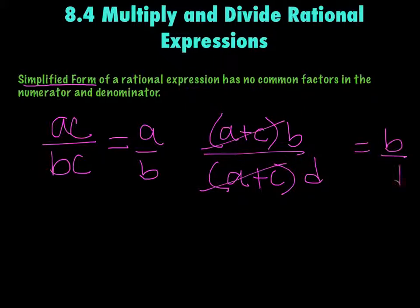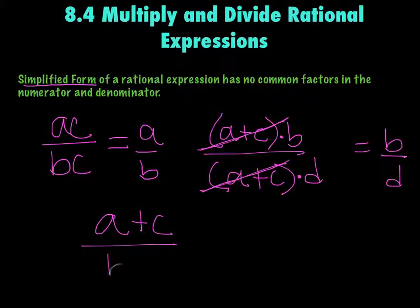But please note, you can only cancel out things that are being multiplied. This is a group being multiplied by b and a group being multiplied by d, so it's okay to cross them out. If I had a plus c over b plus c, I could not cross out just those c's, because they're not being multiplied, they're being added.